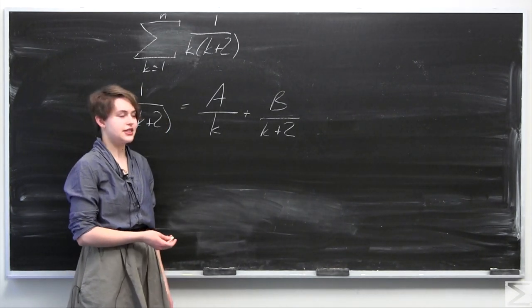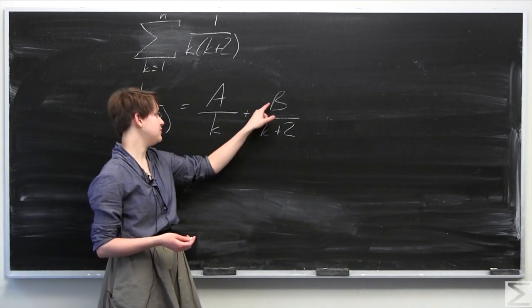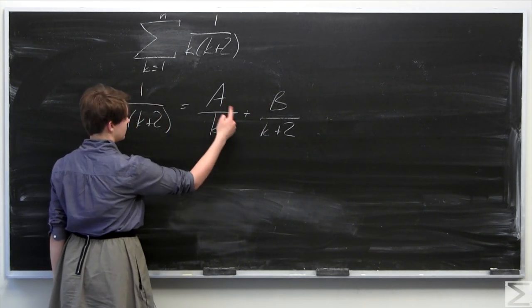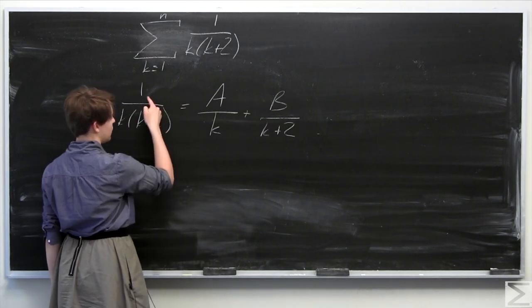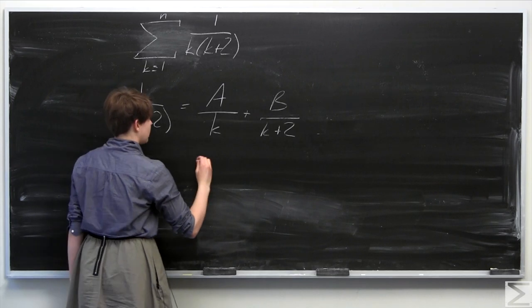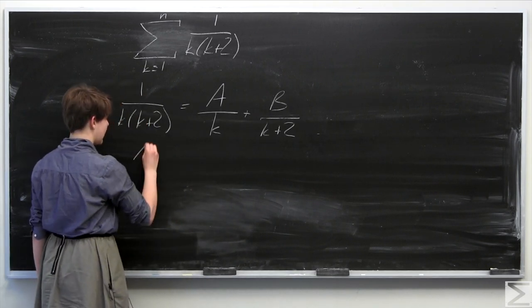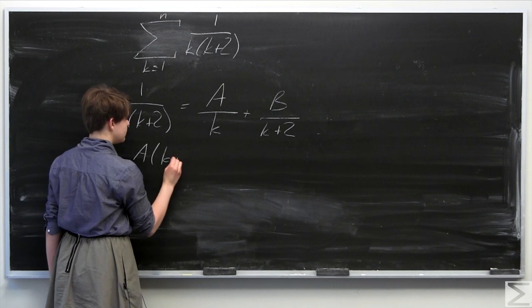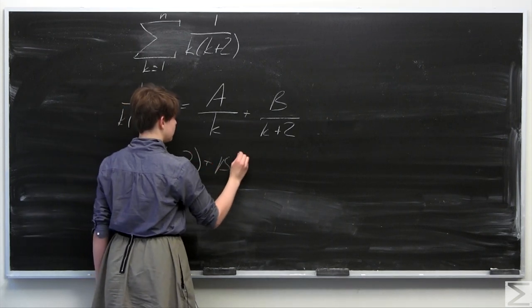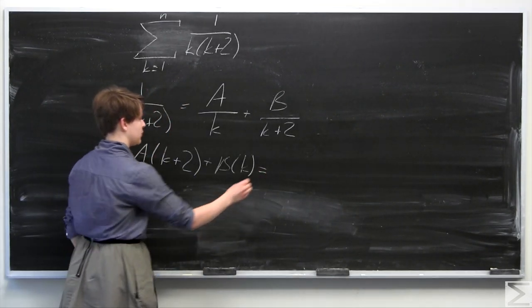To do this, we get a common denominator by multiplying a times k plus 2 and b times k. Then we set those numerators equal to 1 and solve for a and b. So we have a times k plus 2 plus b times k equals 1.